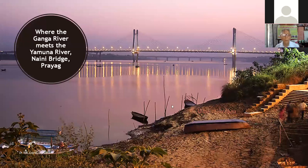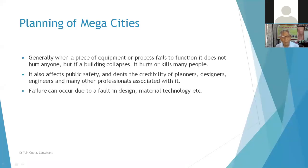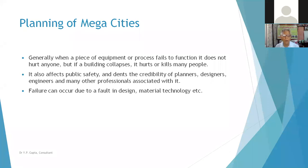Then, planning of mega cities: as I have said, space is critical. Equipment failure is acceptable, but if a building fails it damages the credibility of engineers, planners, and many others associated with it. During earthquakes many buildings fail, and so many people die. Failure can occur not only because of earthquakes but also because of faults in design, material, or technology.